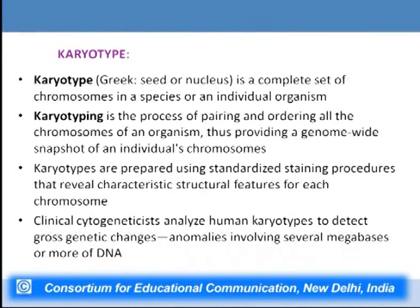The learning objective is to assess various types of chromosomal banding patterns produced by various techniques and to assess various types of chromosomal abnormalities. The word karyotype is derived from the Greek word 'karyon' meaning seed or nucleus, and karyotype refers to the complete set of chromosomes in a species or individual organism. Karyotyping is the process of pairing and ordering all chromosomes of an organism, providing a genome-wide snapshot of an individual's chromosomes. Any individual's cells can be taken to assess whether chromosome number and structure are normal.